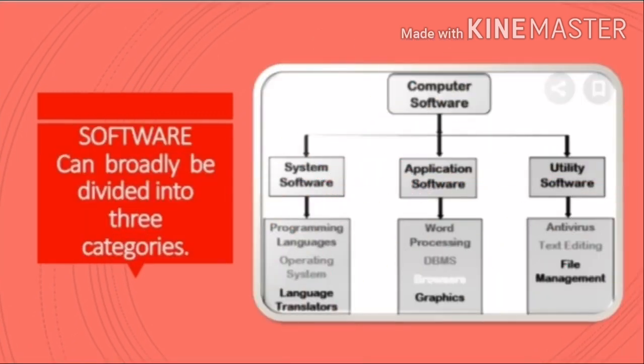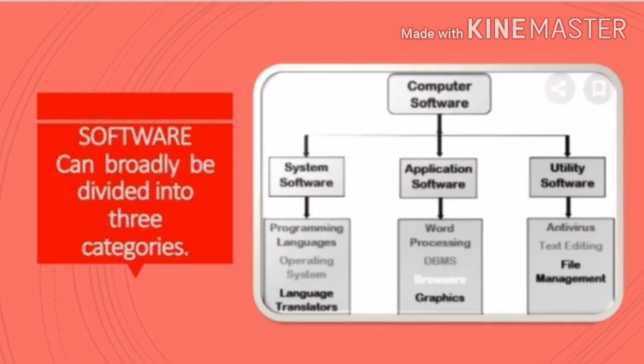Software can be broadly divided into three categories: system software, application software and utility software.